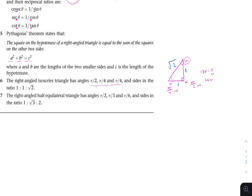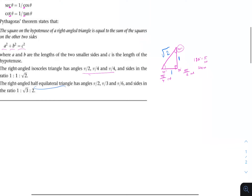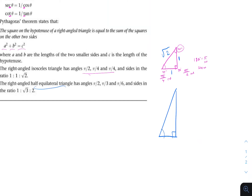For the half equilateral triangle, you have angles of 90, 60, and 30 degrees — that's π/2, π/3, and π/6 in radians. The ratios of the sides are 1 to the square root of 3 to 2, where the shortest side is 1, the middle side is √3, and the hypotenuse is 2.